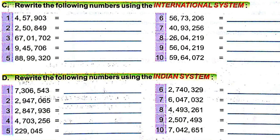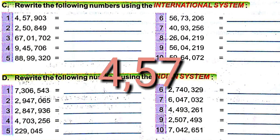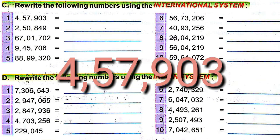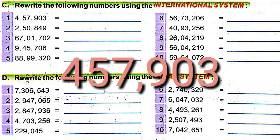You see the question: Rewrite the following numbers using the international system. We will write the numbers in the international system. The numbers are given in the Indian system. You see the first question — the number is 457903. There are six digits. In each period there are three columns, so we have to put a comma after three digits, between 7 and 9.